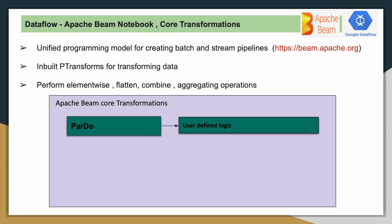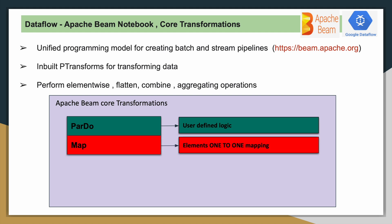The first thing we will discuss is ParDo. ParDo is a transformation available from Beam SDK where if a user has to write their own logic, they will be using ParDo. Next is Map — Map is a simple transformation where if you have to apply element-wise operations.